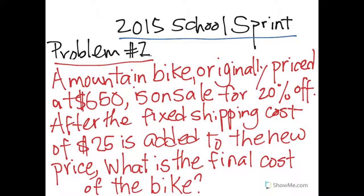Hello everybody, I'm back. This is Christian Academy and we're continuing with the second problem of the 2018 School Sprint. I'll just read the second problem and then we'll solve it. A mountain bike originally priced at $650 is on sale for 20% off. After the fixed shipping cost of $25 is added to the new price, what is the final cost of the bike?